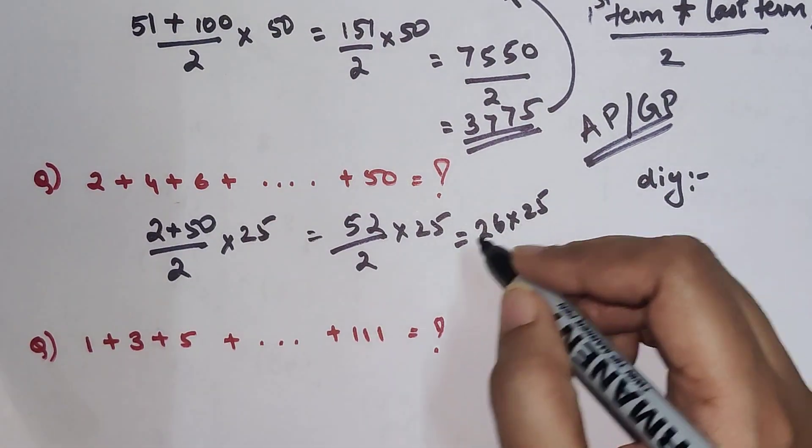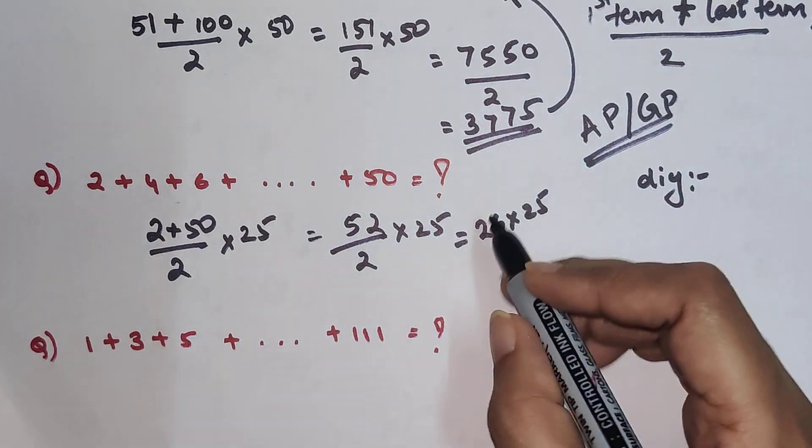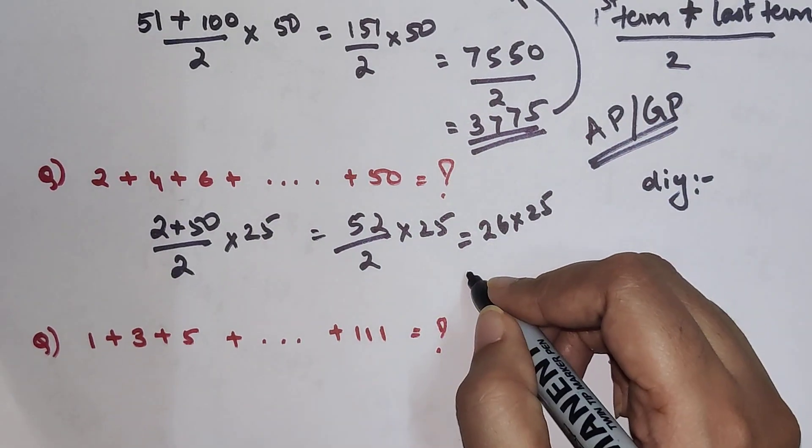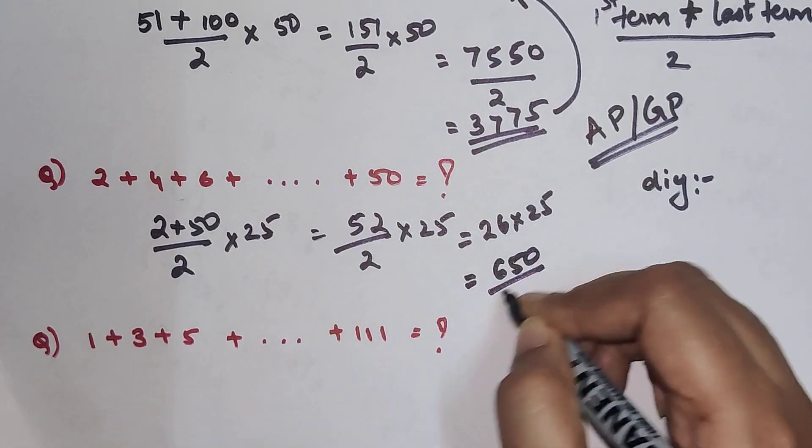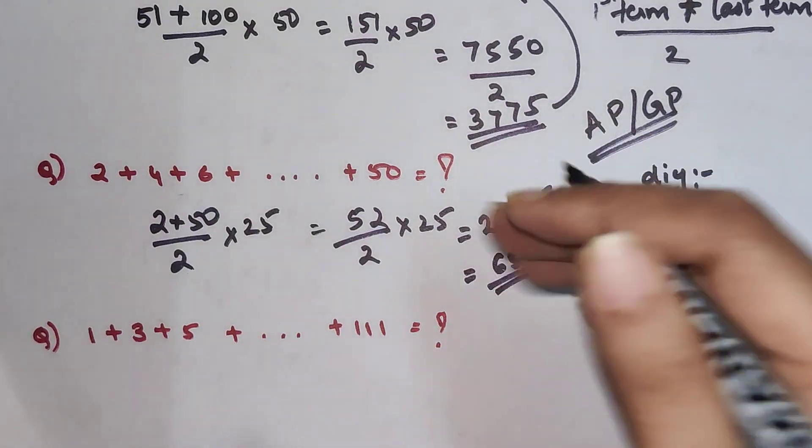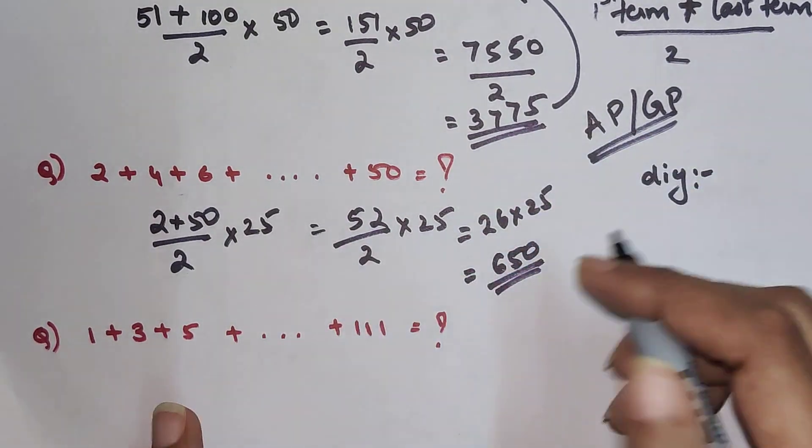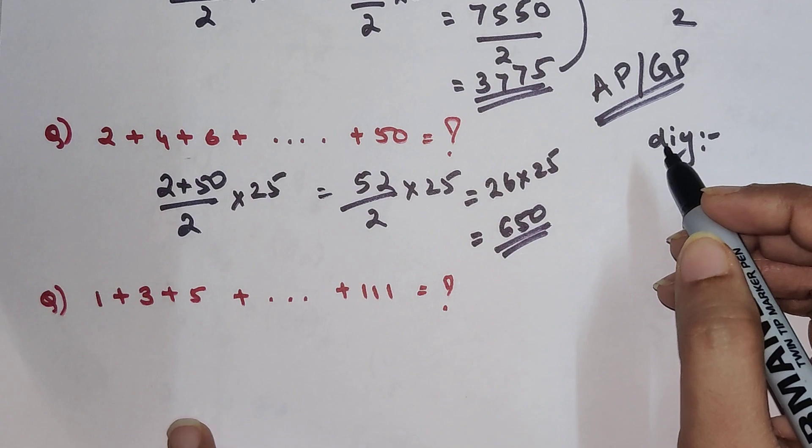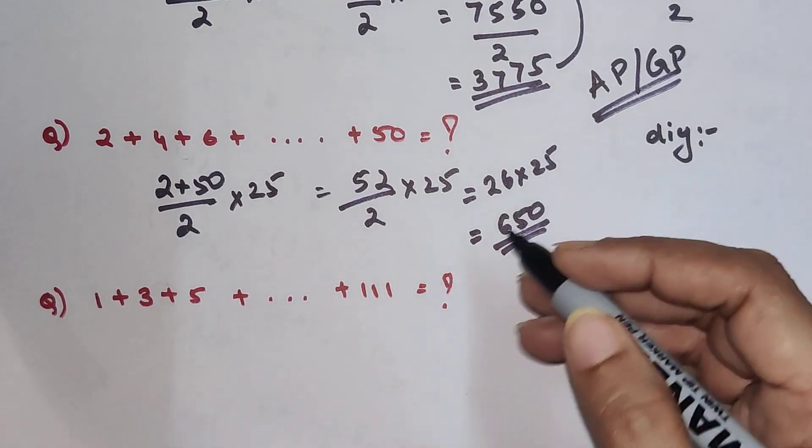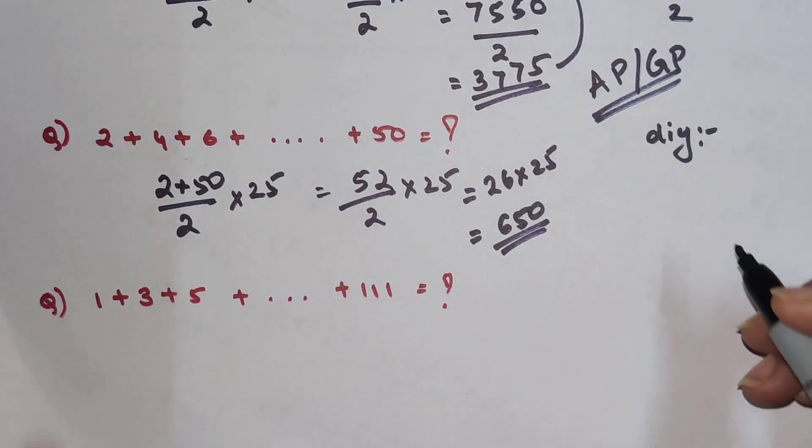25 squared is 625. You have to add one more 25 to make it 26, so this is basically 650. If you didn't understand how I multiplied, that's okay, you can directly multiply this as well. If you want me to explain this multiplication in detail, I will do that in another video. Please let me know in the comment section.